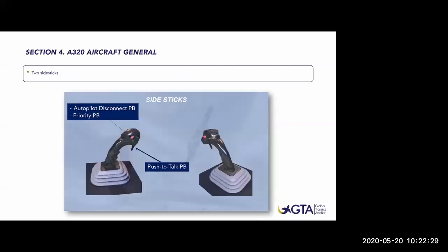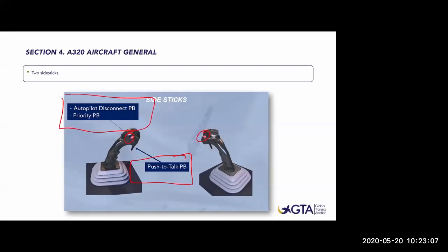These are our side sticks. The side stick is not composed only of the stick itself - it has two buttons with three functions. We have the push-to-talk PTT, which is used for communicating, and the red button which has two functions: the autopilot disconnect push button and the priority push button. Depending on how long you press the button, you'll get one option or the other - either priority or autopilot disconnection.